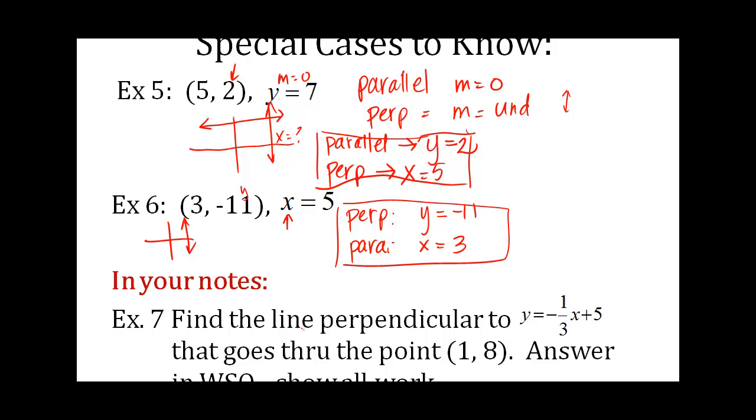In your notes, you're going to complete example 7 and find the line perpendicular to this line, y equals negative 1 third x plus 5, and it goes through this point. Answer it and then show all your work. Make sure you have it ready to go in class. Thanks.